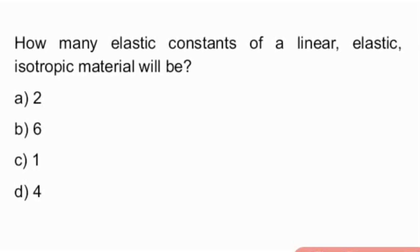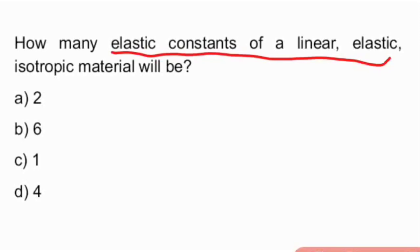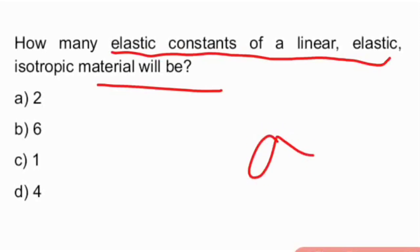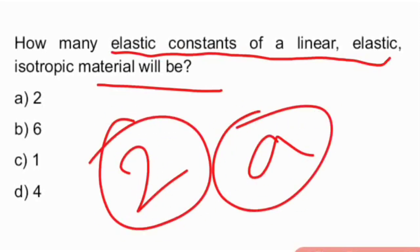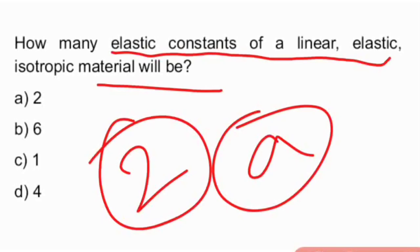So the first question is: how many elastic constants does a linear elastic isotropic material have? The answer is option A — it will have two elastic constants.